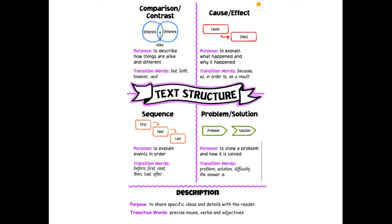The first one is comparison and contrast. The purpose of this text structure is to describe how things are alike and how they are different.